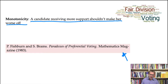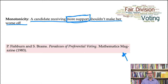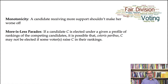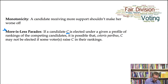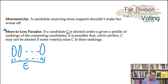In order to make this more precise, we need to think about what it actually means to receive more support from the voters. One way of understanding this gives rise to what's called the more is less paradox. The idea is: you get more support from the voters if some voters move you up in their rankings, keeping everything else the same. This paradox arises when a candidate C is elected under a given profile of rankings — we have an election E with voters one up to N, each with rankings over the set of candidates — and candidate C is declared the winner.